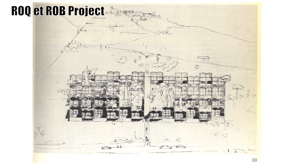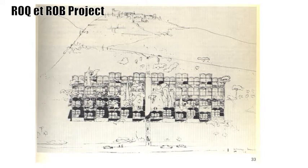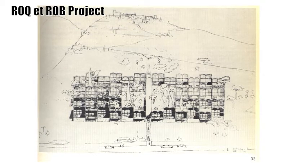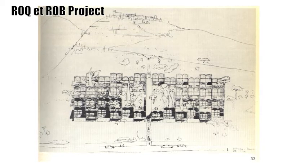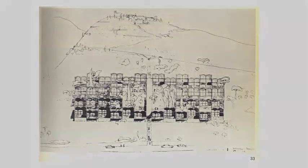This is a project by Le Corbusier, 1948 — Rob. It's a regularized version of an Italian hill settlement. This image marks a true beginning of megastructure ideas after World War II.